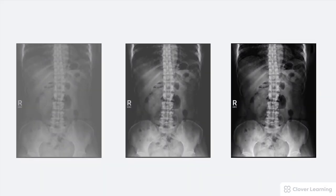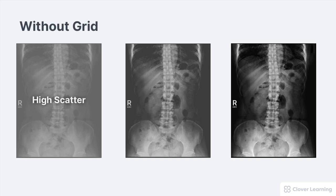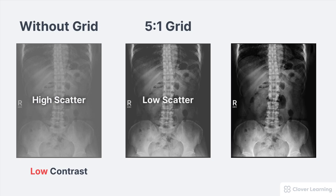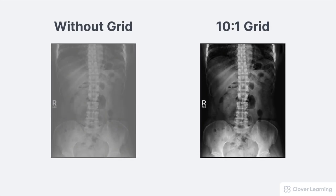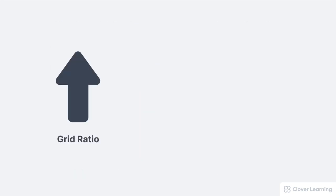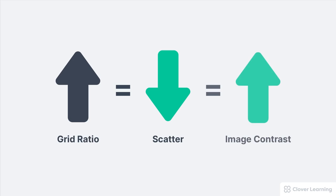Here's an example. The abdomen image on the left was created without a grid, which led to a lot of scatter on the image — lots of gray — and therefore very low image contrast. When the image is repeated with a grid, a significant amount of scatter is removed and contrast is increased. We can increase the grid ratio again from 5:1 to 10:1 and even more scatter radiation will be removed, achieving even higher image contrast. The only disadvantage of using a higher ratio grid is that exposure techniques must be increased and the patient dose will increase.